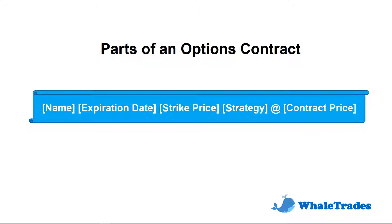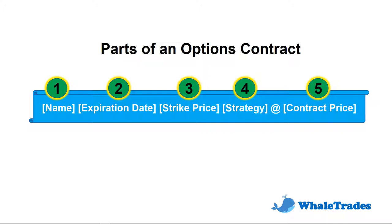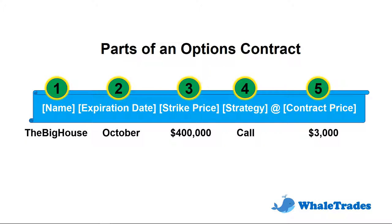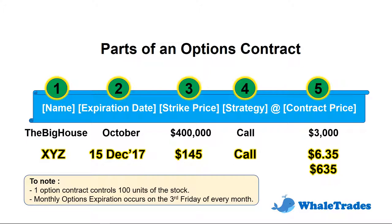To summarize, I've talked about the 5 components of an options contract: firstly, the name or symbol; the expiration date; the strike price or agreed price; the strategy used; and the contract price. These were illustrated using the house example and the XYZ company example. Do note that one option contract controls 100 units of the stock, so there is a need to multiply by 100 to get the amount you pay for each options contract. Also, monthly options expiration refers to the third Friday of the month.